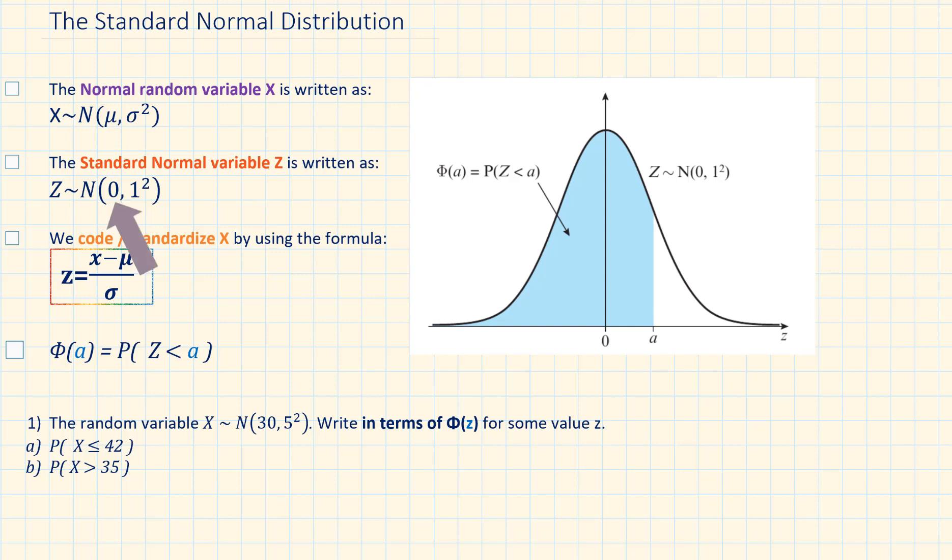A standard normal distribution has a mean of 0 and variance 1². It is important to know how to standardize it because then we are able to compare measurements that have different units.